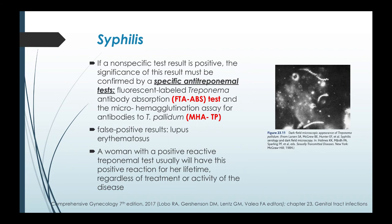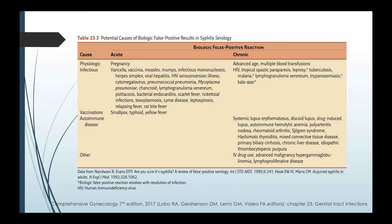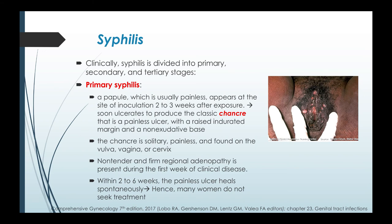If a non-specific test result is positive — meaning if your VDRL or RPR tests positive — the significance of this result must be confirmed by using a specific anti-treponemal test: the FTA-ABS test or MHA-TP. However, false positive results can still occur with specific anti-treponemal tests, especially if the patient has SLE. A woman with a positive reactive treponemal test will usually have this positive reaction for her lifetime regardless of treatment or activity of the disease. This table summarizes the potential causes of biologic false positive results in syphilis serology.